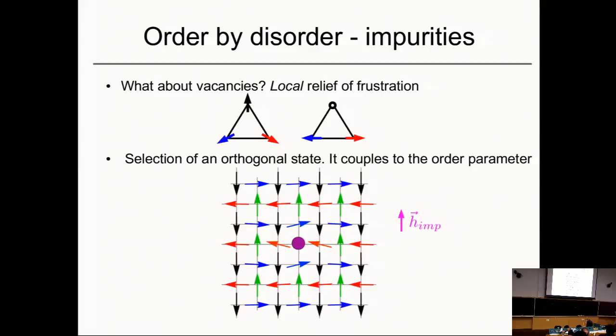If we remove a spin, we effectively generate an exchange field along a direction such that one sublattice would like to be perpendicular to the other. So you see there's an interesting interplay: thermal and quantum fluctuations would like to select collinear states, while impurities would like to select perpendicular states. There is an interesting competition that we would like to explore further.